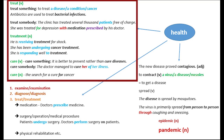'She was treated for depression with medication prescribed by her doctor.' The verb treat is used in passive form here. The doctor prescribed medicine or medication. The noun form of treat is treatment: 'He is receiving treatment for shock,' 'She has been undergoing cancer treatment.'